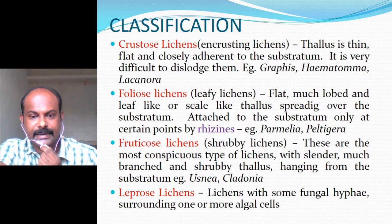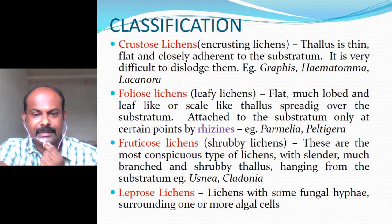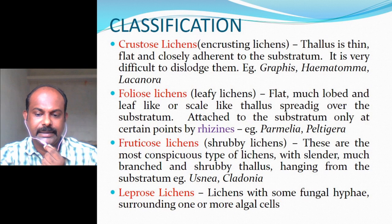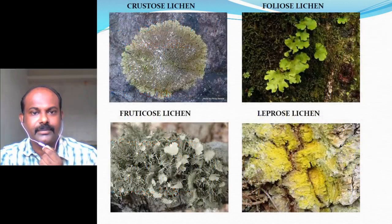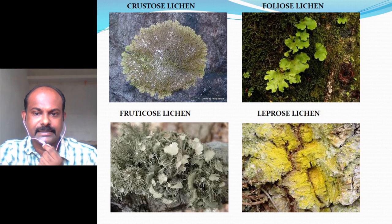Leprose lichens have some fungal hyphae surrounding one or more algal cells and they usually appear as a dusty powder on the substratum. These figures represent the nature of the lichen thallus in Crustose, Foliose, Fruticose, and Leprose lichens.